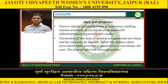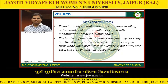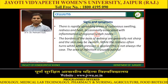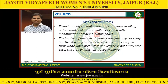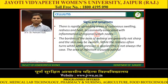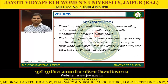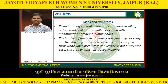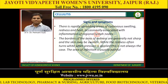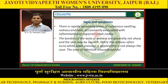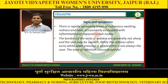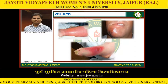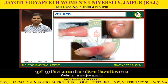Signs and symptoms of cellulitis include rapid spreading areas of cutaneous swelling, redness and heat, occasionally associated with inflammation of regional lymph nodes. The borders of the area of redness are generally not sharp and the skin may be swollen. The redness often turns white when pressure is applied. The area of infection is usually painful. Images of cellulitis are shown.